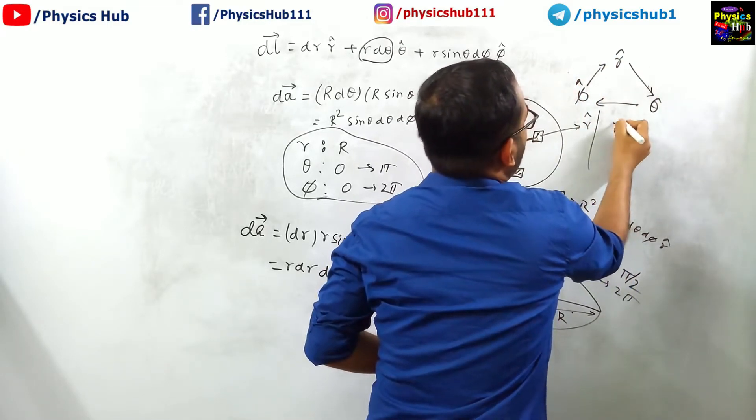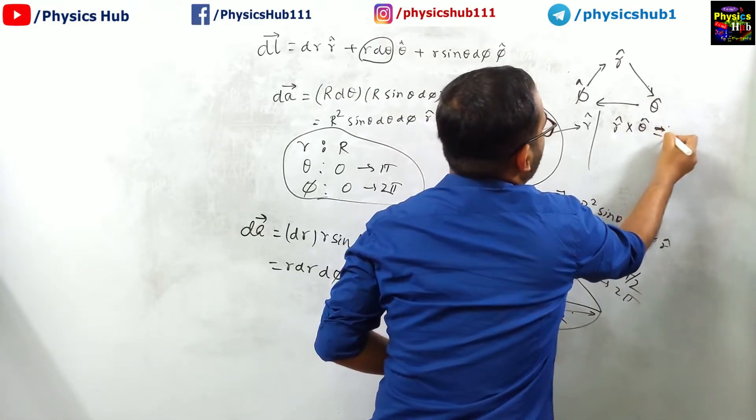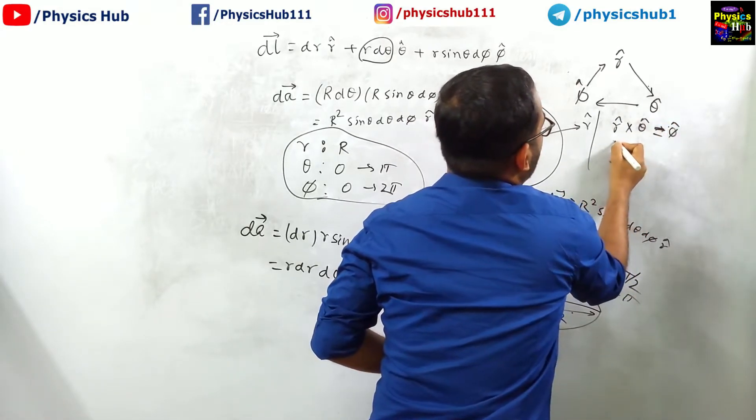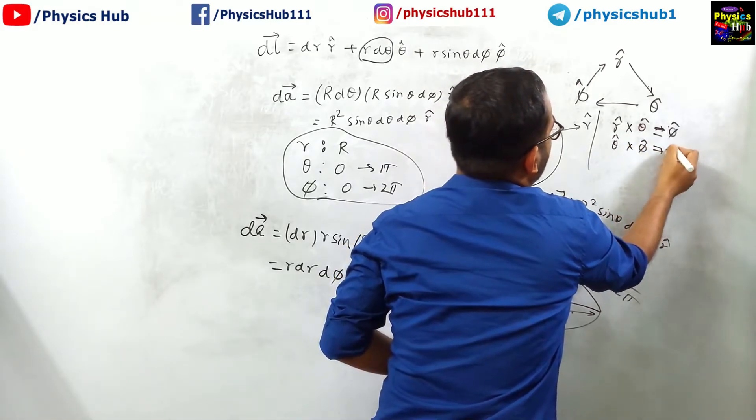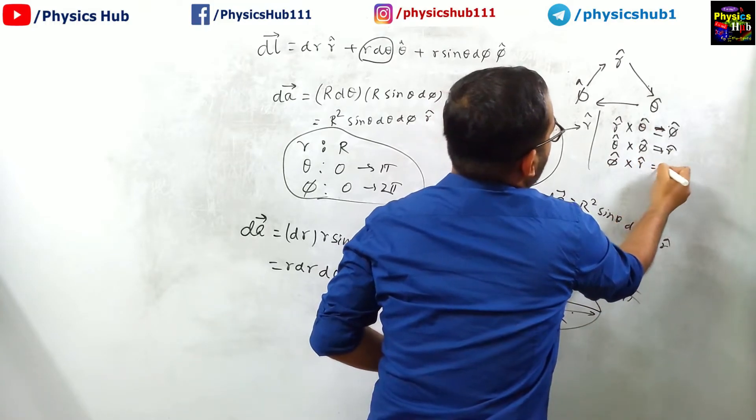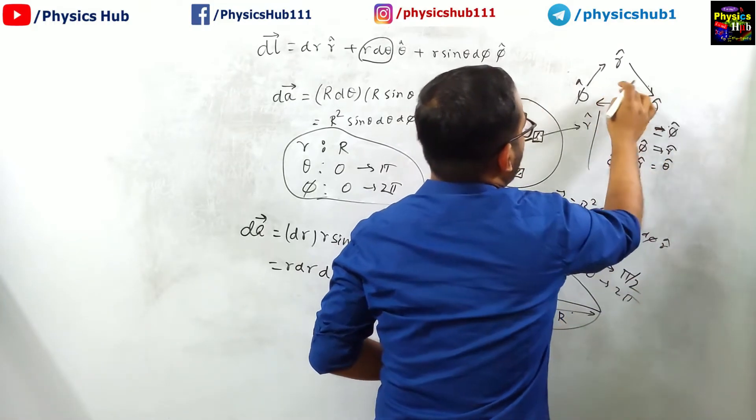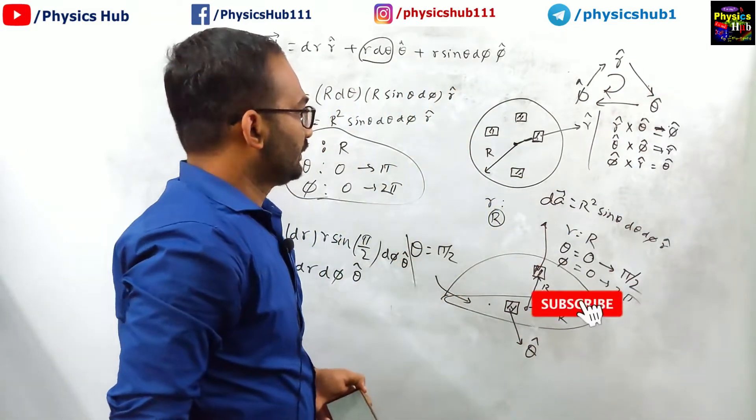If you take the cross product between theta cap and phi cap, you get r cap. So if you go in a cyclic manner, you get the result in a cyclic manner. Cyclic rotation, you get the result in this way.